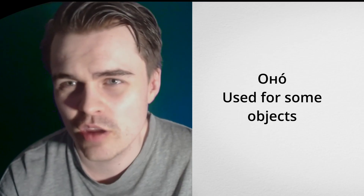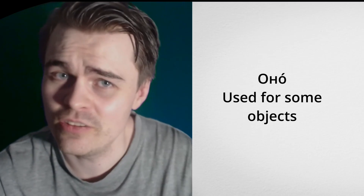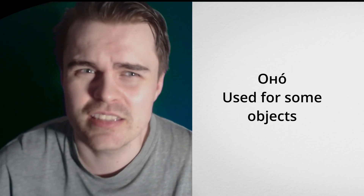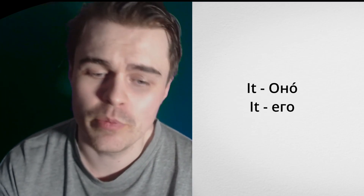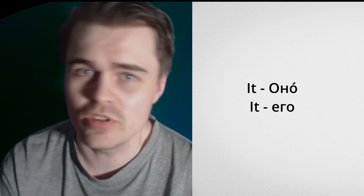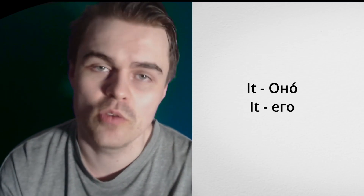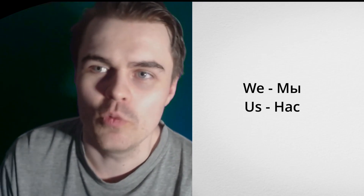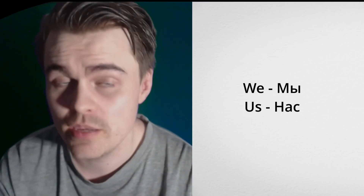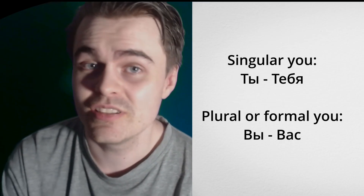Then there's 'it,' which is ono — it's used for neutral-gender objects. I'll go into gender in a future lesson. The acted-upon form of ono is also yevo, same as 'him,' so both 'he/him' and 'it/it' share yevo in Russian. Then 'we' is my — a bit confusing because it sounds like 'me' in English — and the acted-upon form is nas.